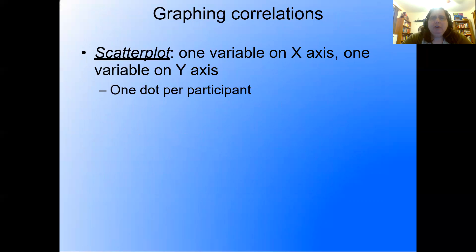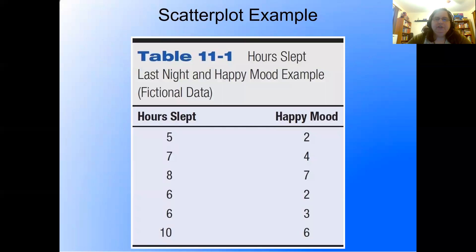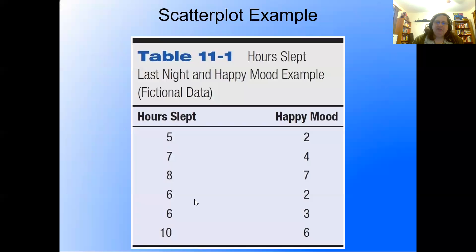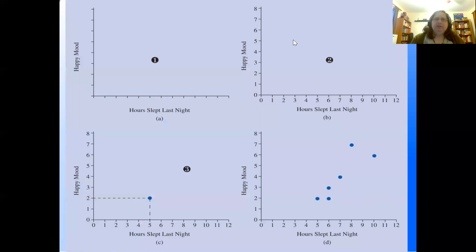Let's talk about graphing correlations, which is a key piece in understanding them. To graph correlations, we use a scatter plot — we put one variable on the X-axis and one variable on the Y-axis, and we use one dot per participant. Let's look at the hours of sleep and happy mood example using some fictional data. Each person has two scores.